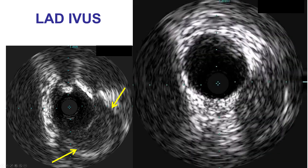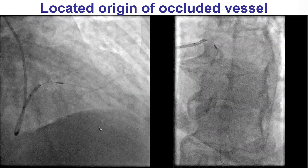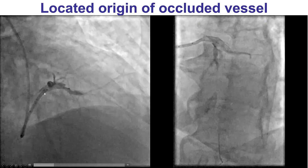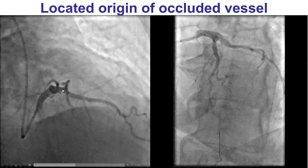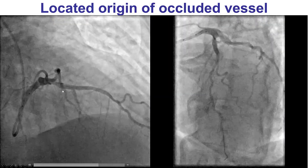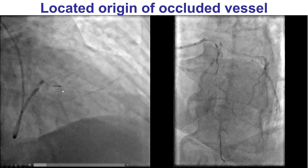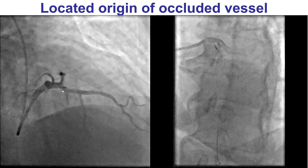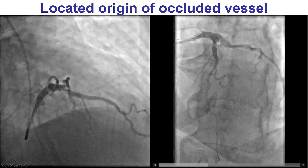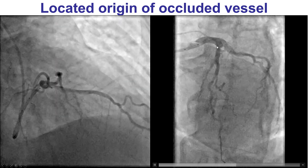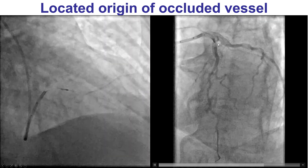That is close to the proximal LAD. Here is the vessel. And this is where the IVUS was located when we identified the ostium of the occluded vessel — an early diagonal vessel.